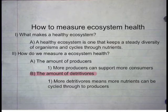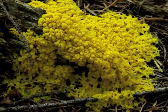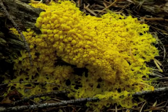The second measure is the amount of detritivores. More detritivores means more nutrients can be cycled through to producers. Detritivores actively break down nutrients and return them back into the environment. This process is incredibly important as it continues the cycle from nutrients to producers.